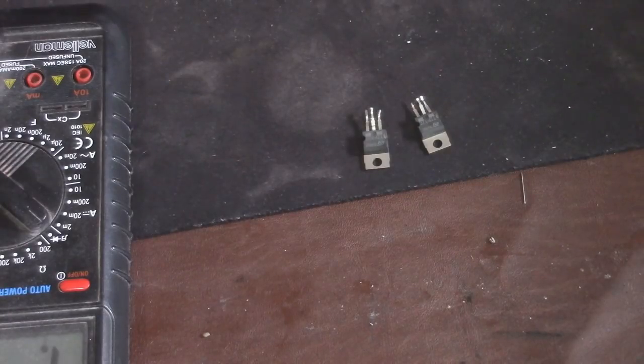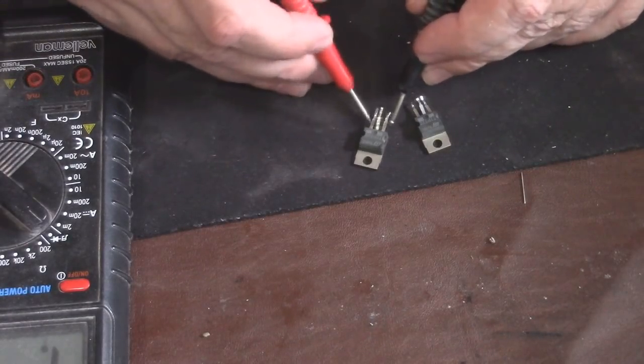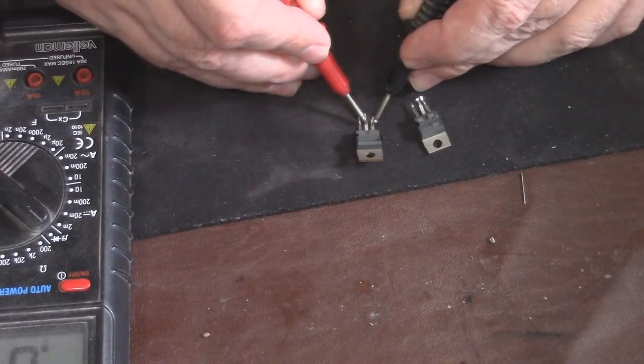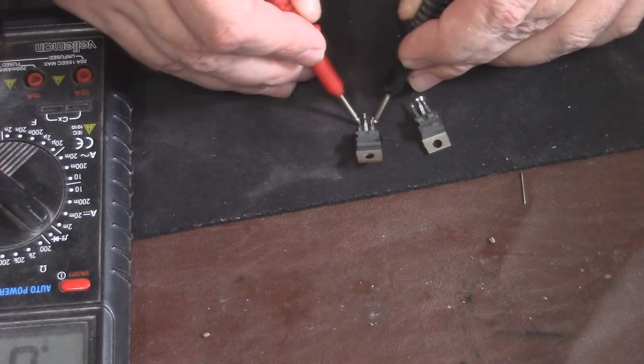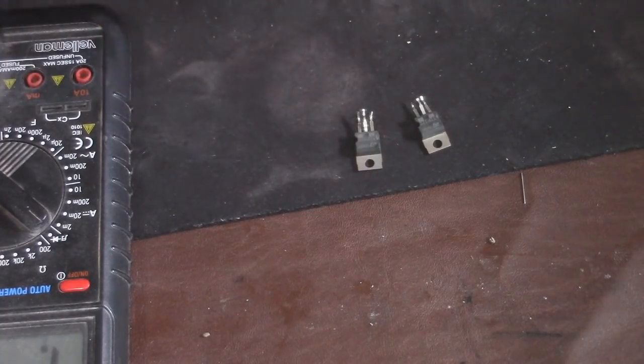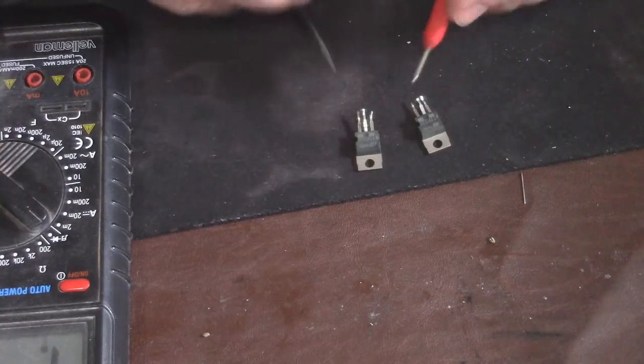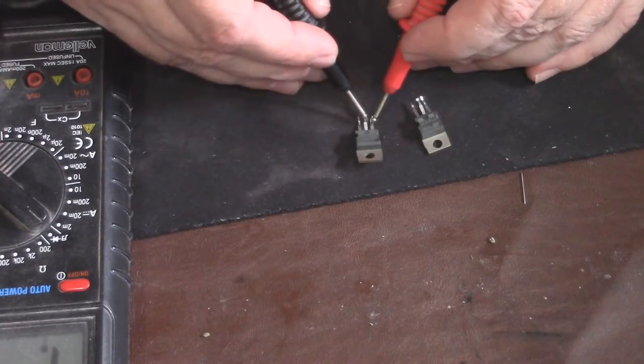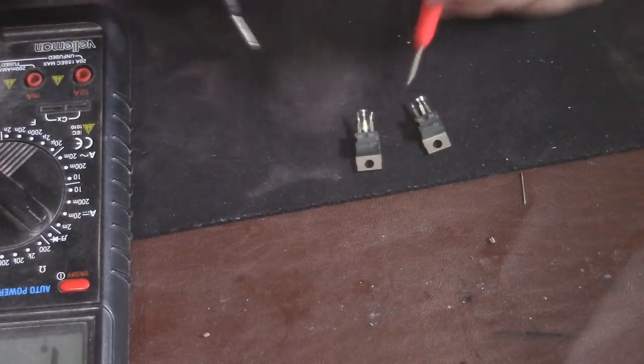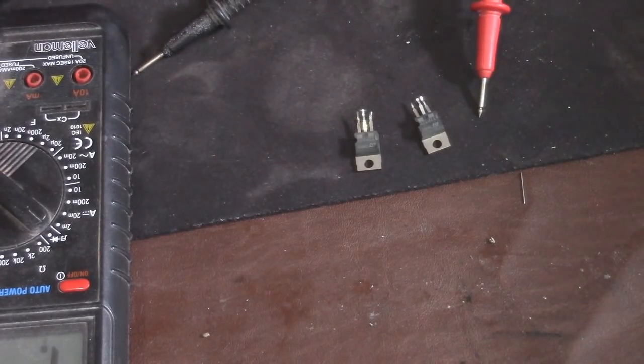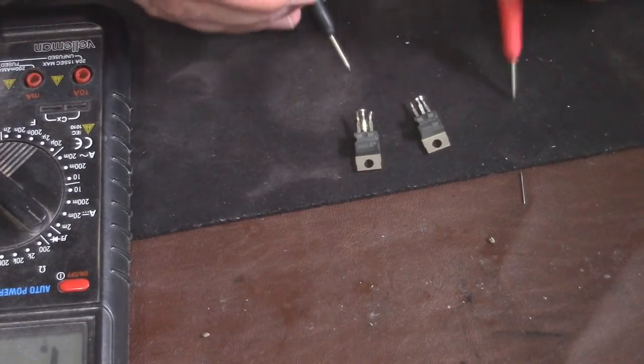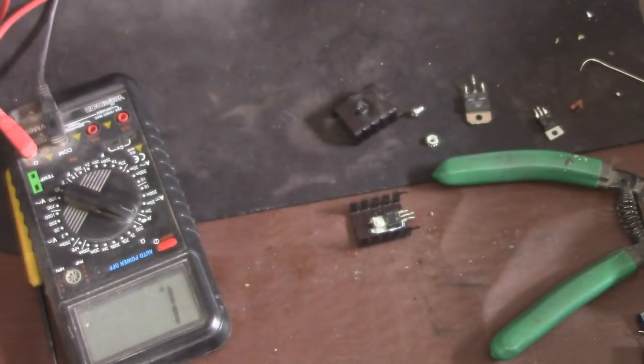Now when we go to the base and the collector we should get something. And when we go to the emitter we should get something. But when we flip these around it shouldn't be like that. And it isn't. That transistor should be fine. Now, not all transistors are tested this way.